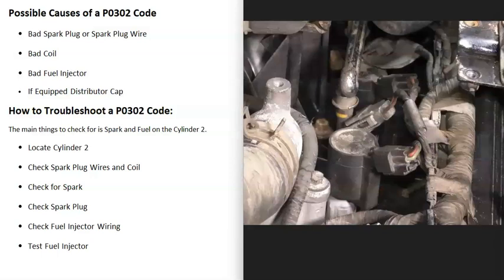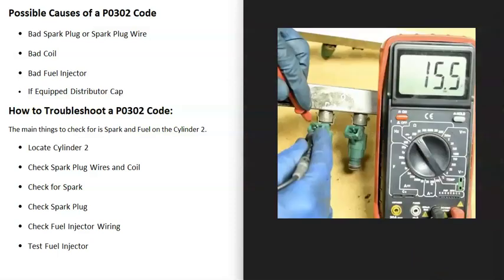If you are getting spark on cylinder two, the next thing to check is the fuel injector. There are different ways to do this. If they're easy to get to, sometimes you can just swap them with another one and see if the problem follows. For example, if you swap cylinder two injector with cylinder one and then get a P0301 code, you know that injector is bad.